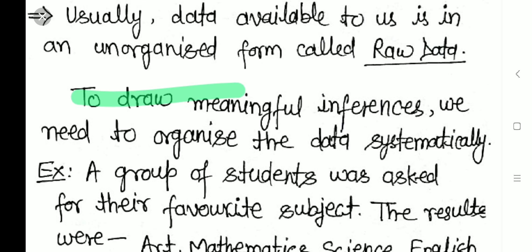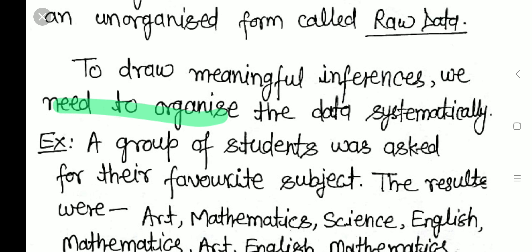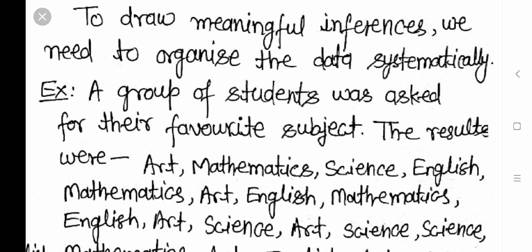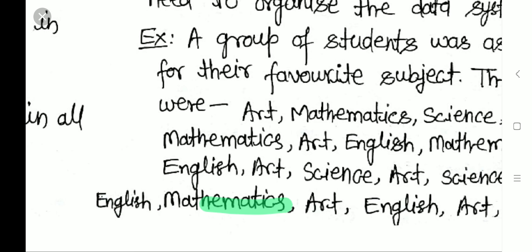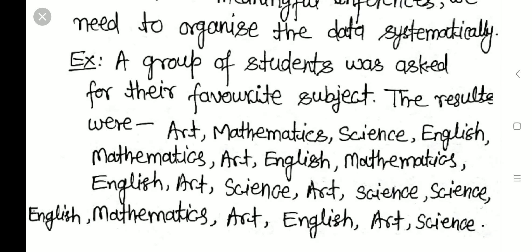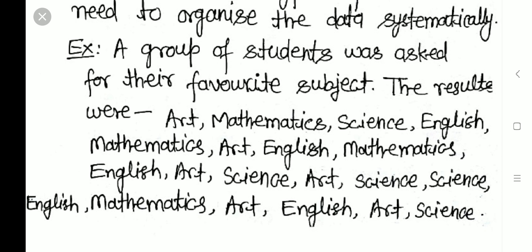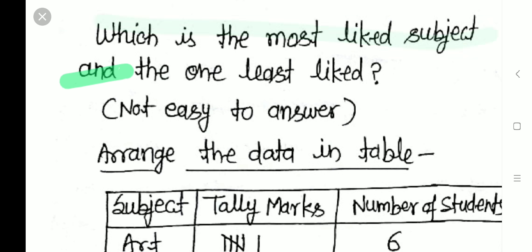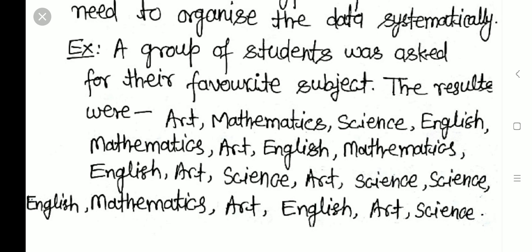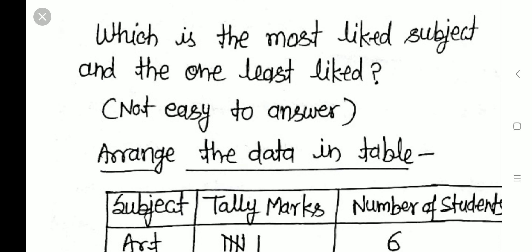For example, a group of students was asked about their favorite subject. The responses were: Art, Maths, Science, English, Mathematics, Arts, English, Mathematics, English, Arts, Science, Arts, Science, Science, English, Mathematics, Arts, English, Arts, Science. From this unorganized list we cannot draw any conclusion — we cannot say which subject is most liked or least liked. This is raw data.